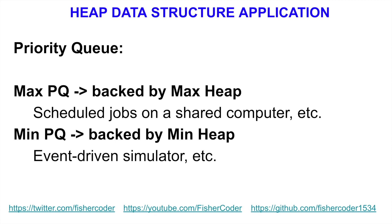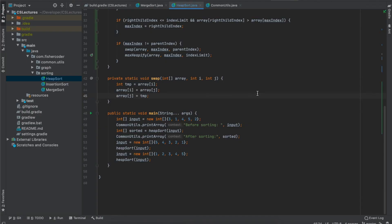The heap data structure has many practical applications beyond heapsort. Priority queues are backed by heaps. A max priority queue, backed by a max heap, is used to schedule jobs on a shared computer by priority — the highest priority job executes first. A min priority queue, backed by a min heap, suits an event-driven simulator where all items are events associated with a time of occurrence, and events must be simulated in order of their occurrence time.